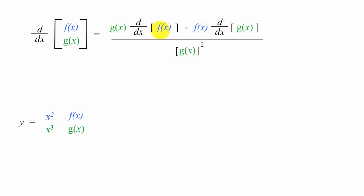Everywhere there is f of x, I'm going to put x squared. And everywhere there's g of x, I'm going to put x cubed, the green g of x. I'll put the green x cubed.